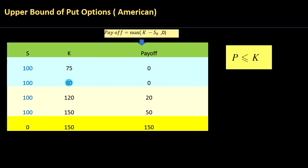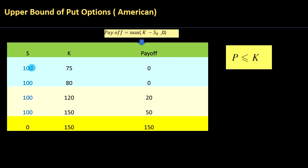Let's look at another case where you have a put option with a strike of $80. You will still not exercise this option, because why would you sell it for $80 when you can sell it for $100 in the market? So the payoff is zero. A put option is not valuable when your strike is less than your underlying.